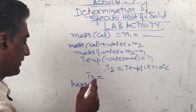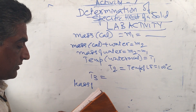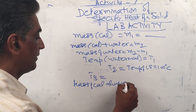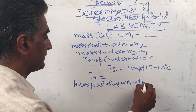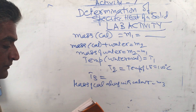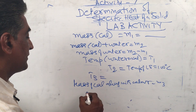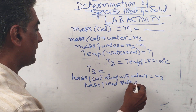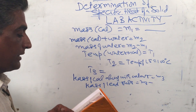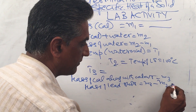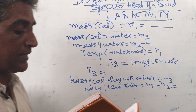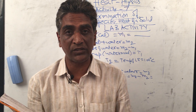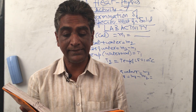Mass of the calorimeter along with contents is m3. Therefore, the mass of the lead shots is m3 minus m2. Since there is no loss of heat to the surroundings, we assume the entire heat lost by the solid — the lead shots — is transferred to the calorimeter and water to reach the final temperature.